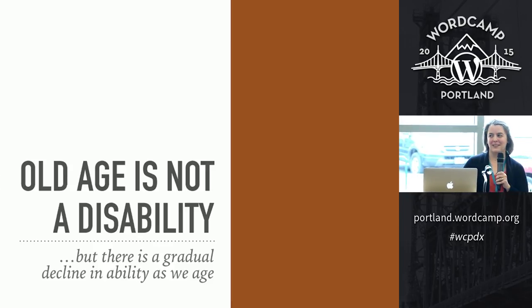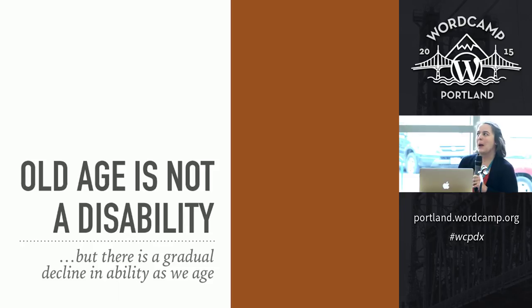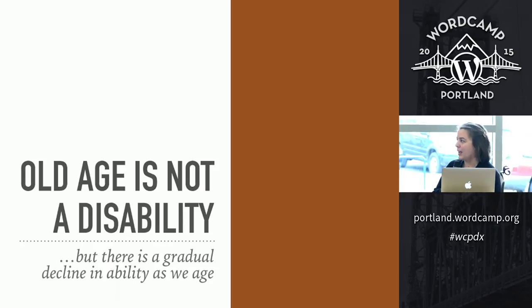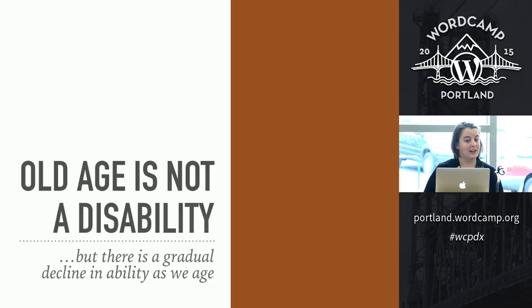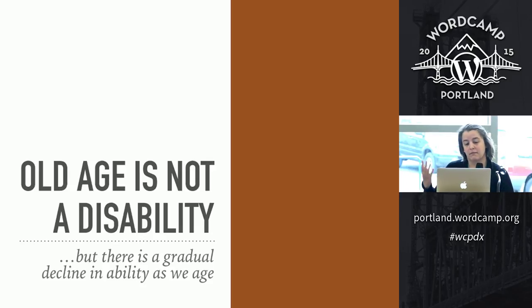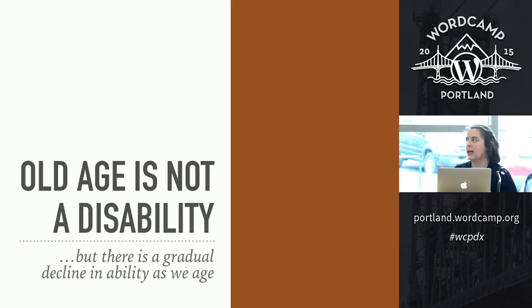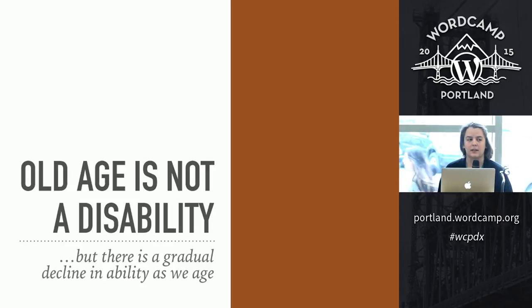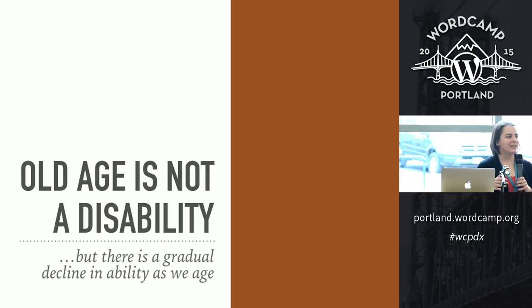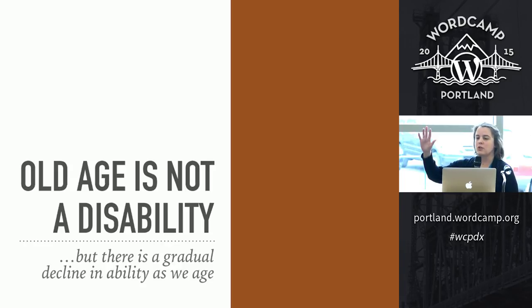Old age is not a disability — please don't think I'm saying that. But I think we can all agree that as we age, there's definitely a gradual decline in our ability to see, hear, and unfortunately think. I'm not that old, but I need reading glasses, and if I don't have them I can't do my job. Technically that could be considered a disability, but I wouldn't call it that. I became really interested in design for the older population when I became the volunteer webmaster for the Oregon State Beekeepers Association. Beekeepers are a great group of people, and what's interesting about them as an audience is that they range in age from about six years old to 90-plus years old.